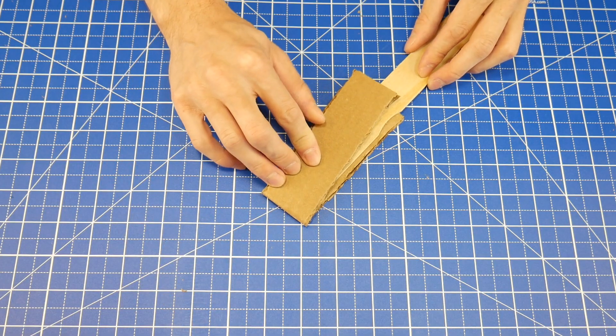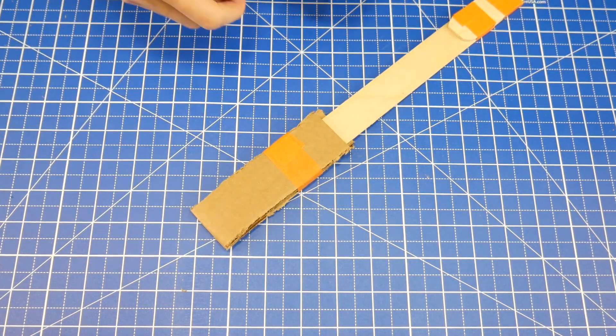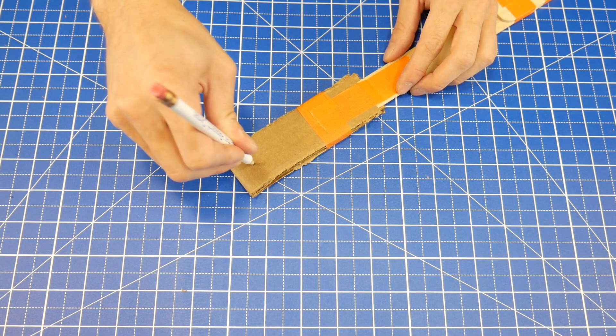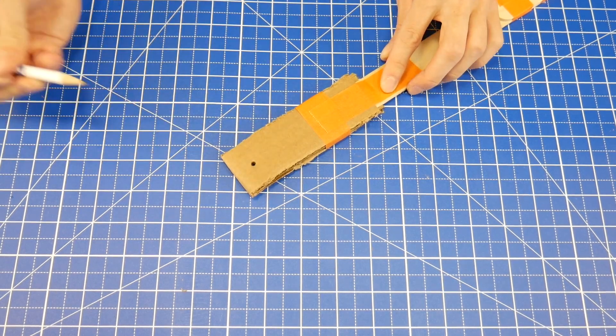Take one of the pieces, fold it in half, and then tape it to the end of the handle, like this. Then, use a pencil or another sharp tool, and poke a hole near the end of this piece.